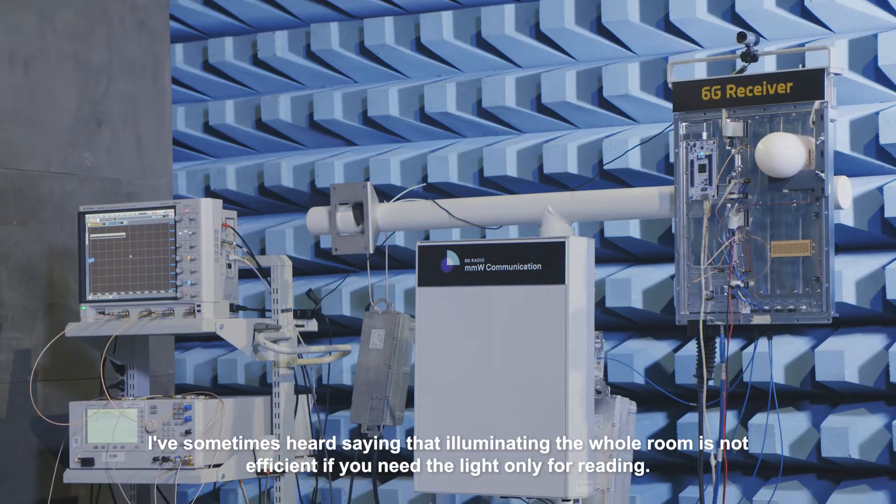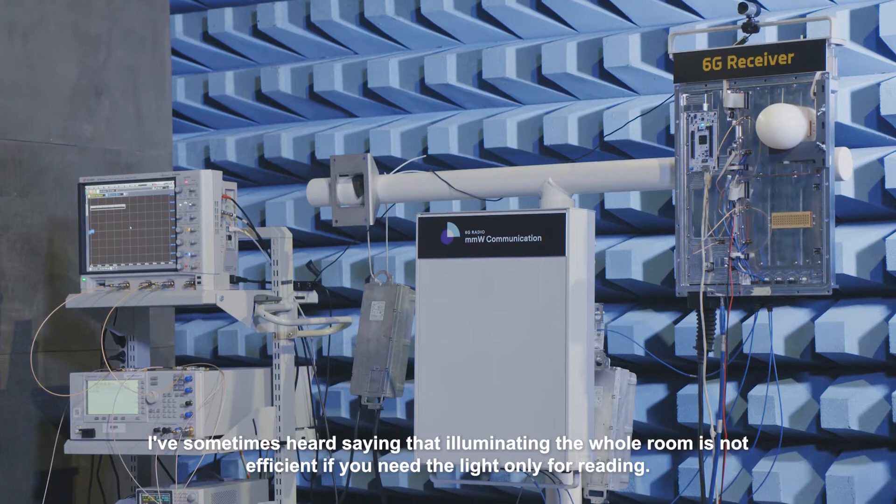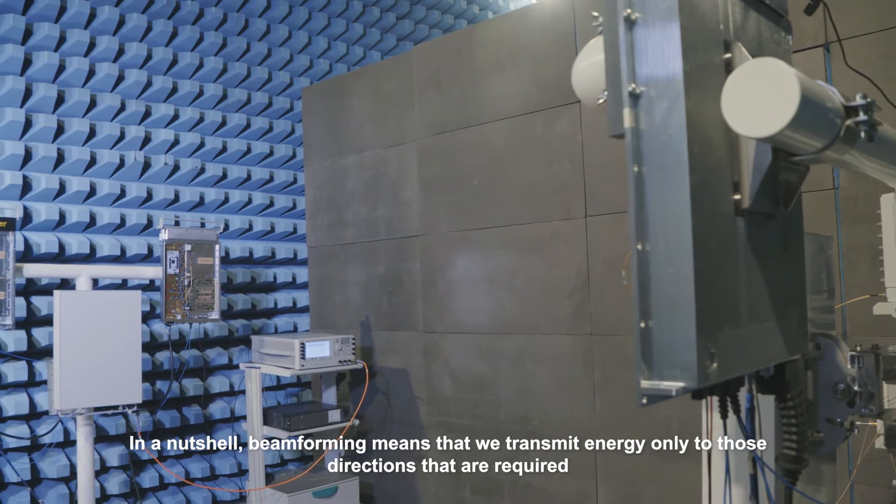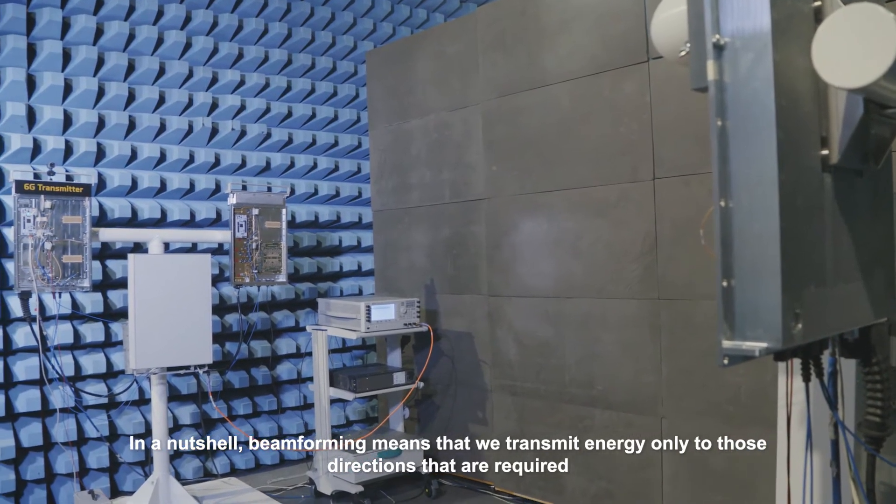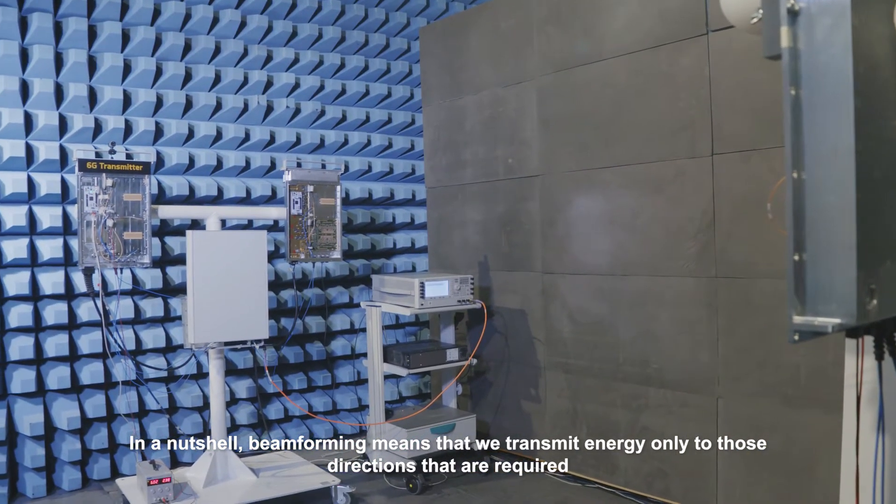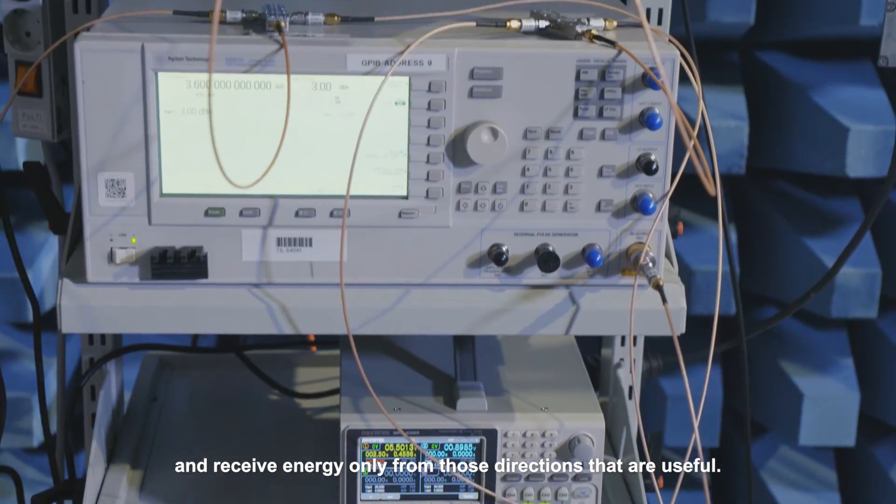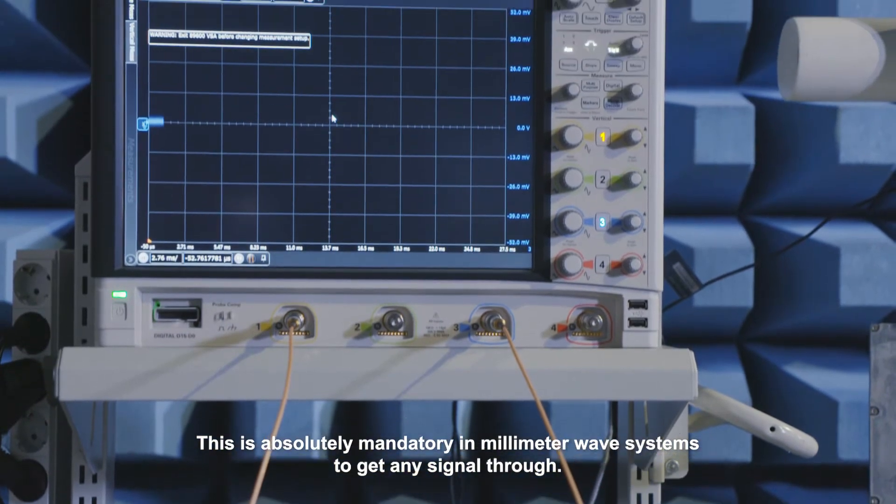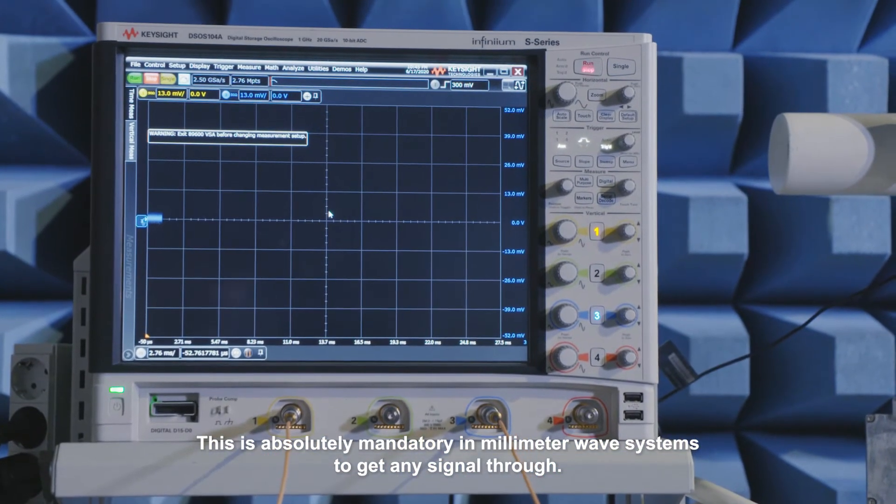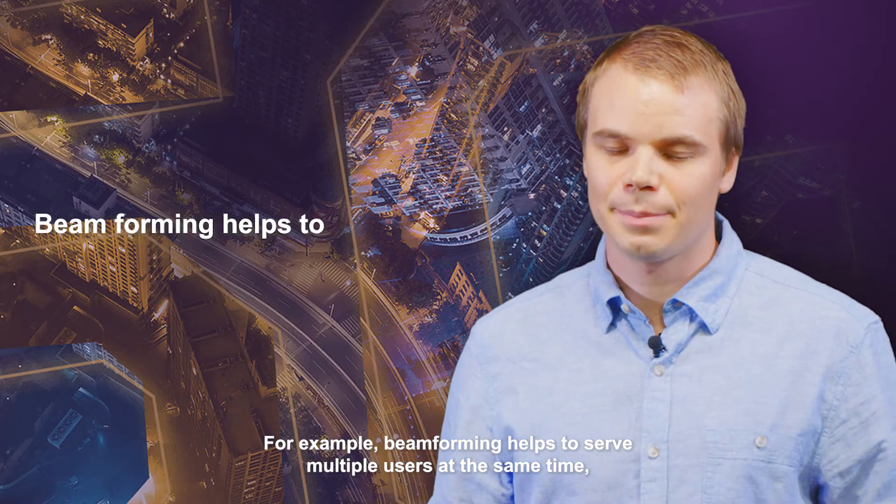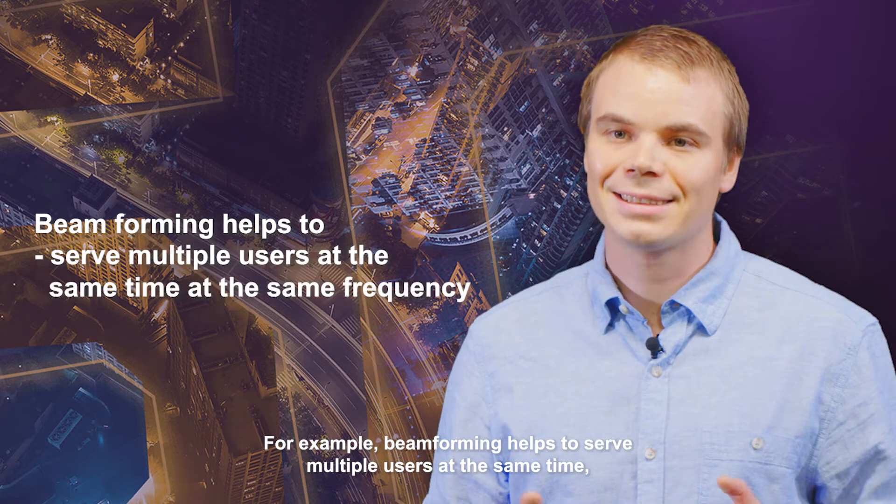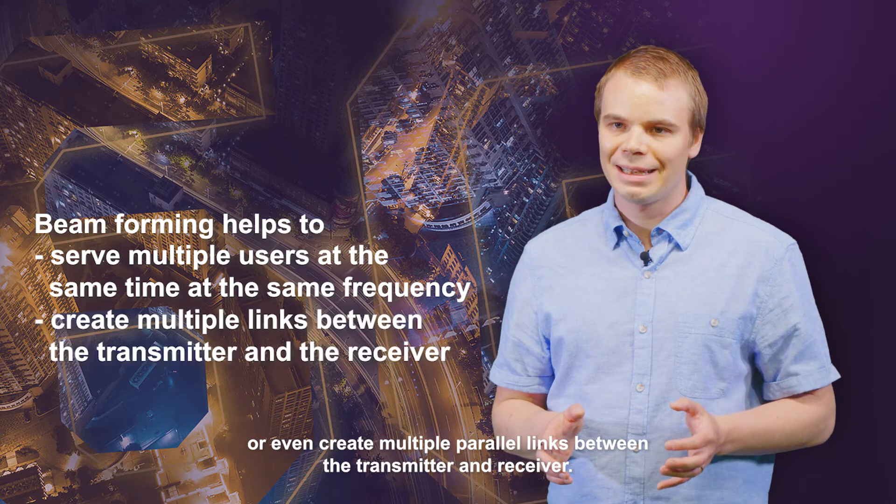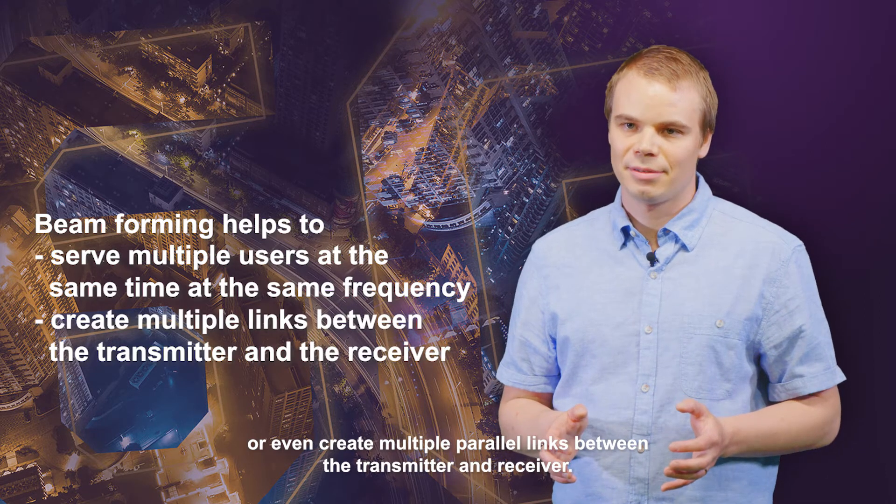I've sometimes heard saying that illuminating the whole room is not efficient if you need the light only for reading. In a nutshell, beamforming means that we transmit energy only to those directions that are required and receive energy only from those directions that are useful. This is absolutely mandatory in millimeter wave systems to get any signal through. For example, beamforming helps to serve multiple users at the same time at the same frequency or even create multiple parallel links between the transmitter and receiver.